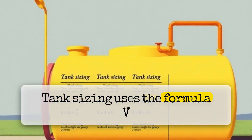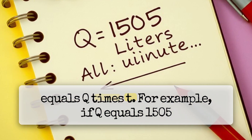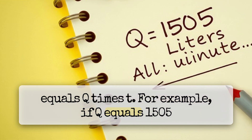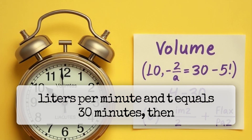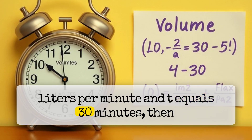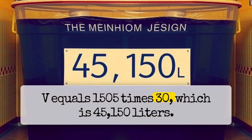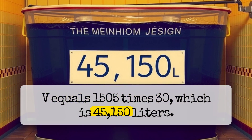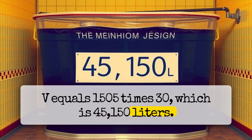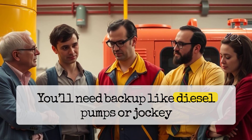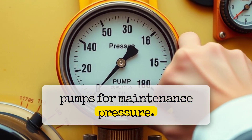Tank sizing uses the formula V equals Q times T. For example, if Q equals 1,505 liters per minute and T equals 30 minutes, then V equals 1,505 times 30, which is 45,150 liters. You'll need backup like diesel pumps or jockey pumps for maintenance pressure.